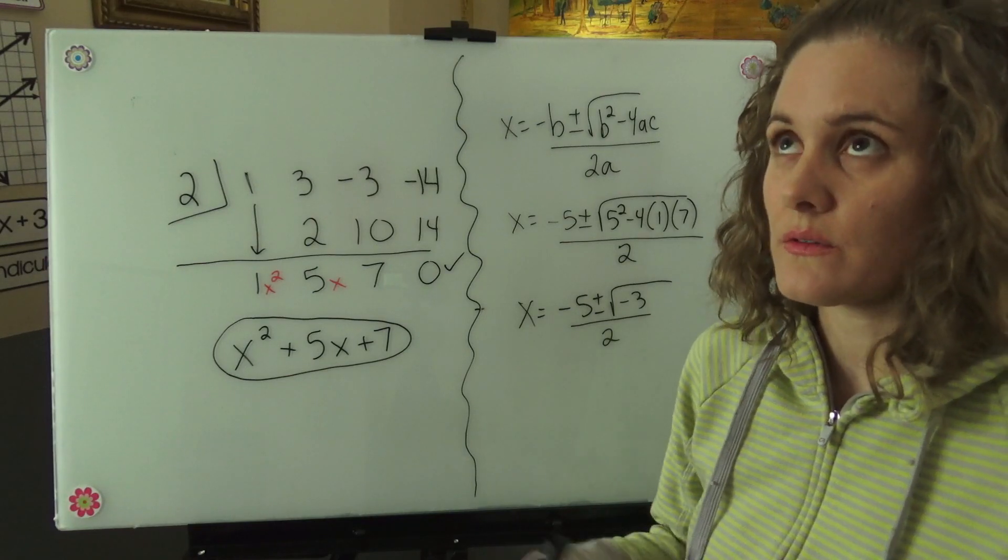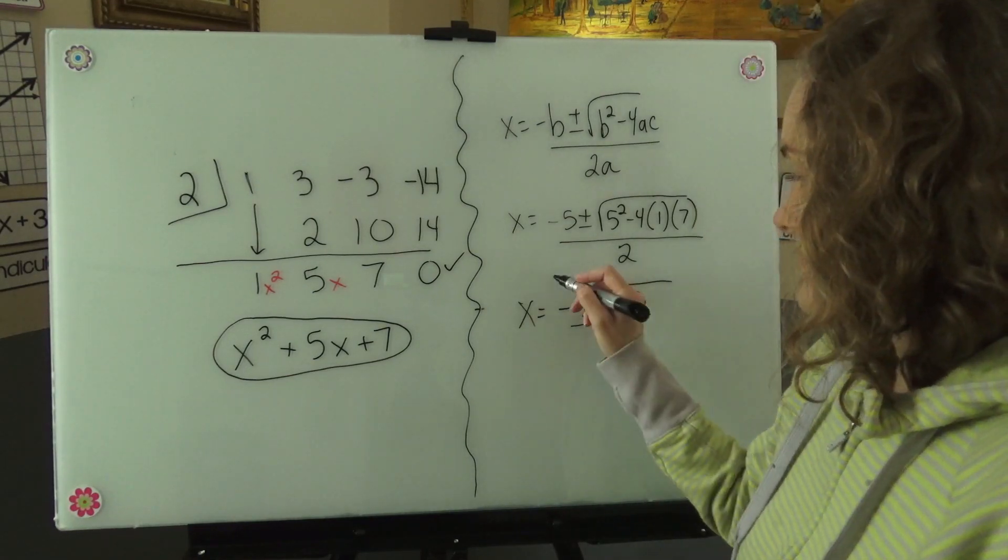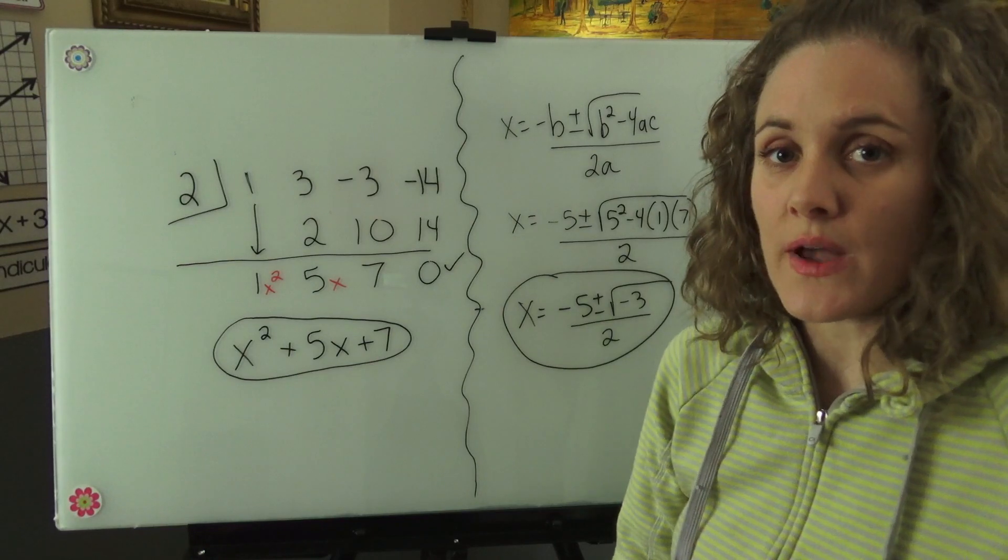However, they are zeros that we find. Our other zero had been two. So these are the zeros of our polynomial.